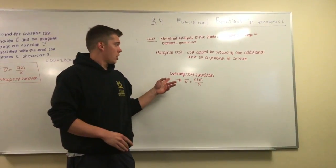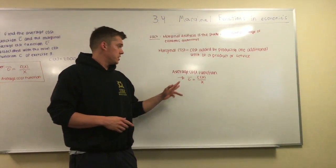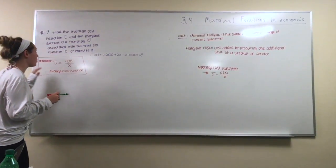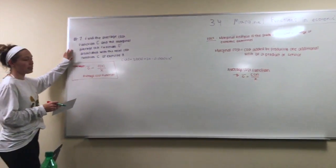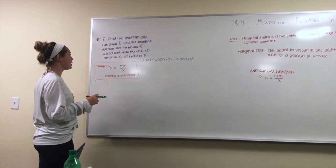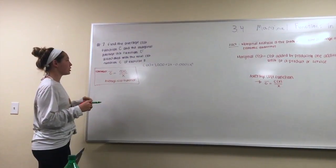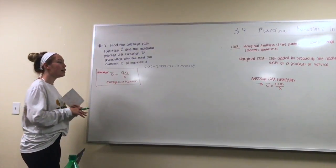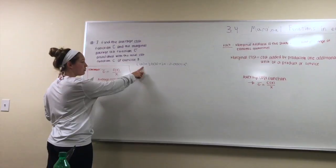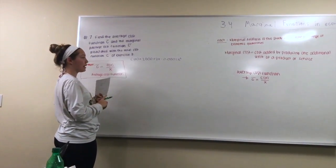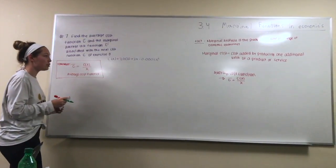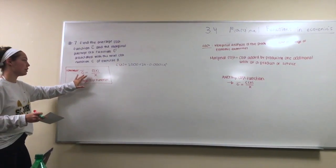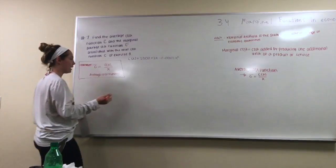Continuing on with our lesson we're going to move into average cost functions. This is denoted as C̄ = C(x)/x. Okay, so we've just introduced us to the average cost function. So the problem that we're going to be going over is number 3.4, number 7. And that is saying find the average cost function C̄ and the marginal average cost function C̄' associated with the total cost function C of exercise 3. We should remember that the C(x) equation for exercise 3 was C(x) = 2,000 + 2x - 0.0001x². We should also remember that the average cost function C̄ equals C(x) over x. So let's go ahead and plug that in to this equation.